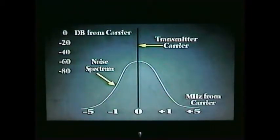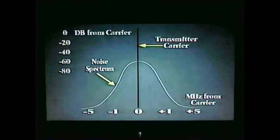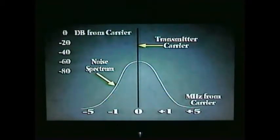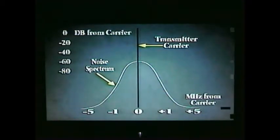Transmitter noise is generated in the first few stages of the transmitter and is amplified in the following stages along with the desired carrier frequency. The final amplifier may be a source of noise several megahertz away from the carrier. So to ensure interference-free operation at a site, it is necessary to know the level of the noise generated by a transmitter.